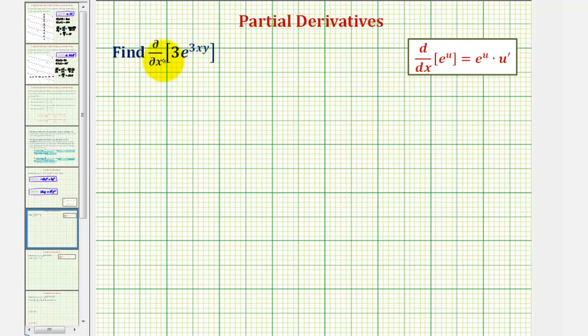To do this, we're going to treat y as a constant and differentiate with respect to x. But I'm going to go ahead and rewrite this and say that our function f of x comma y equals three times e raised to the power of three xy.